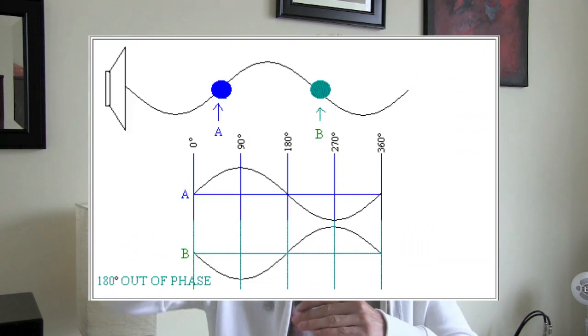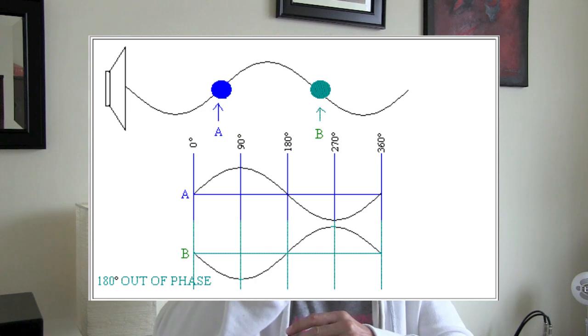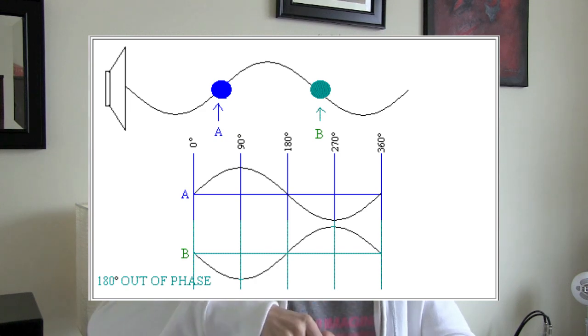Phase cancellation, put simply, is basically picture yourself having two kick drums layered and one kick drum starts with its sound wave going up and the other kick drum starts with its sound wave going down. They cancel each other out because the amplitudes sum up and net out to effectively zero.